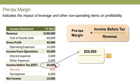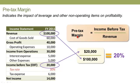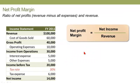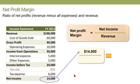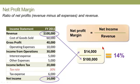So we call that the pre-tax margin. As you can see, the term 'margin' reflects that we're computing these ratios. Finally, all the way down the income statement, net profit margin uses the bottom line — net income of $14,000 — divided by revenue of $100,000, giving 14%. For many industries this would be a phenomenal net profit margin, but it really depends on the industry and sector.